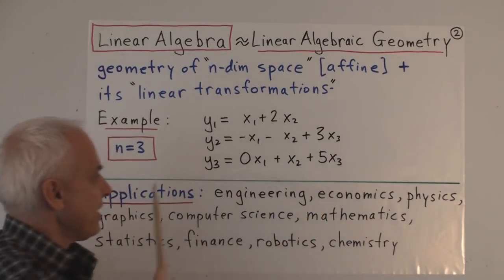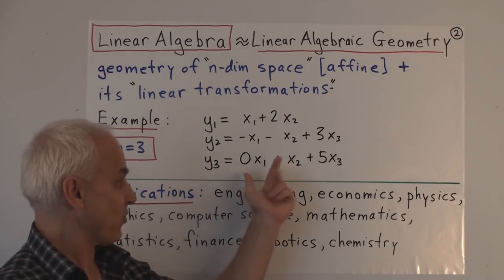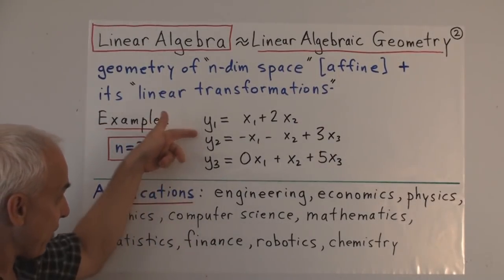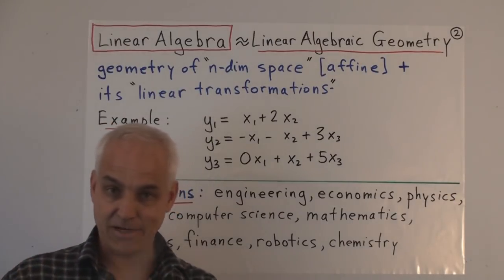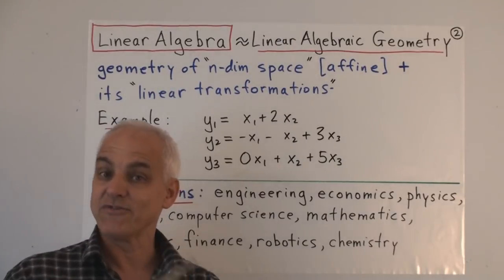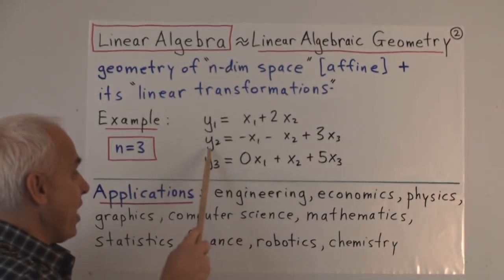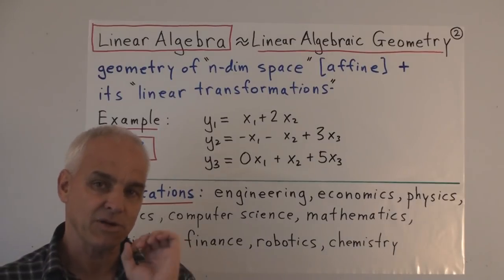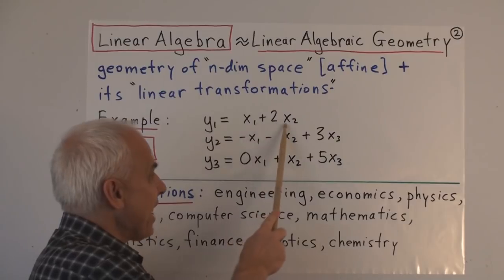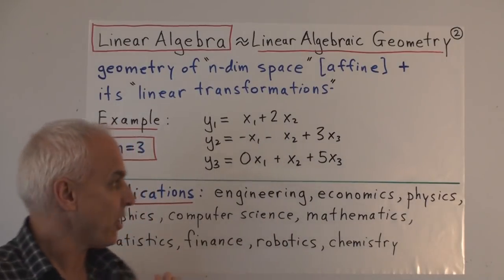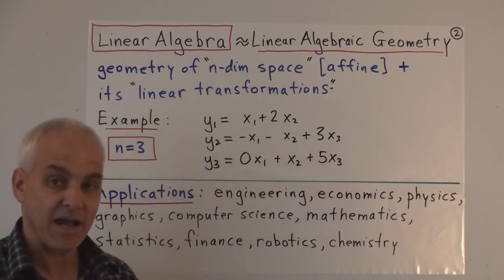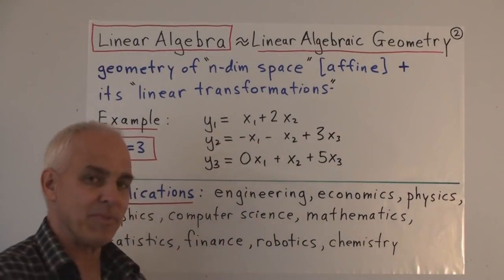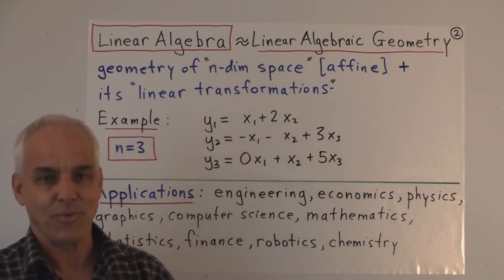We're going to be working a lot with situations like this: one set of variables x1, x2, x3 representing a point in three-dimensional space, and another triple y1, y2, y3 representing a second point, with some transformation from the x's to the y's. The combinations are of a very particular simple kind — only involving the x's to the first power. There are no x's squared, no products of x's. Each x simply appears with a coefficient, which is a number.